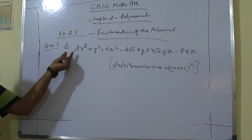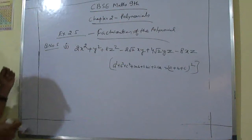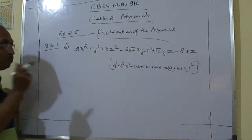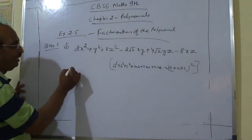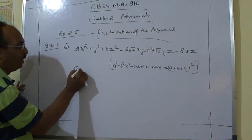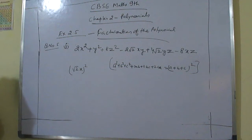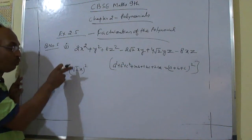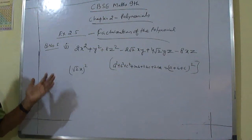We need to convert 2x² into a perfect square. Since 2 is not the square of a whole number, we write 2 as (√2)², so 2x² becomes (√2·x)².